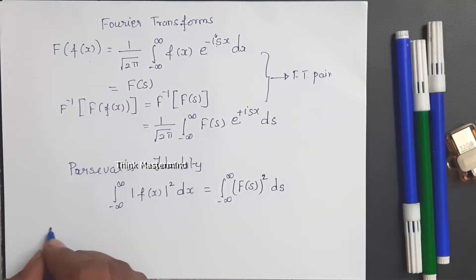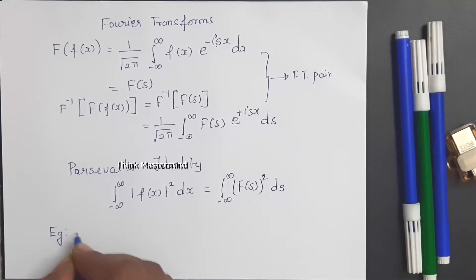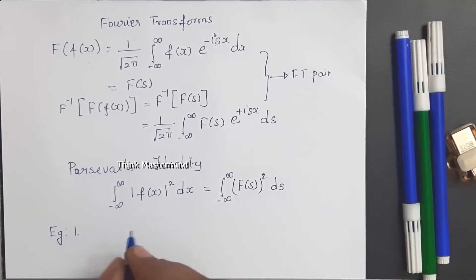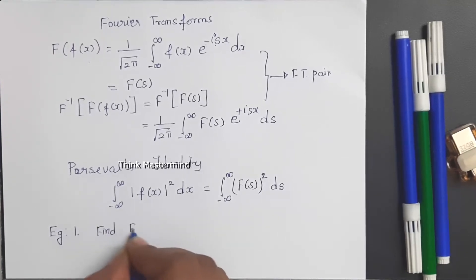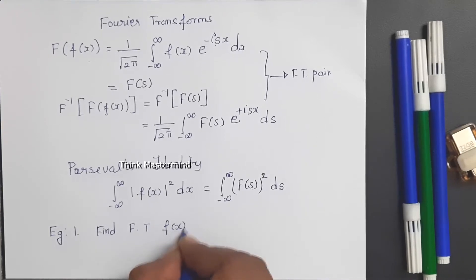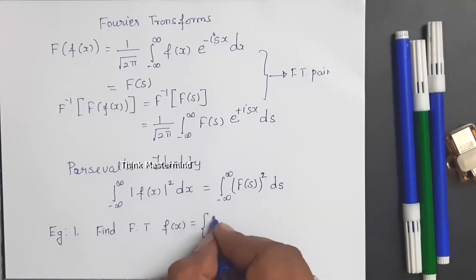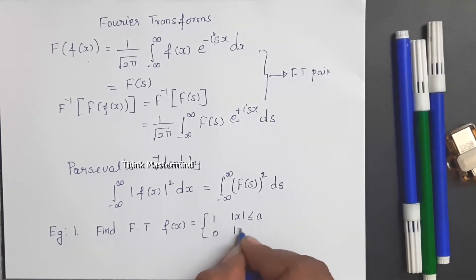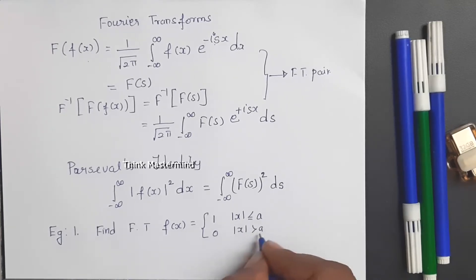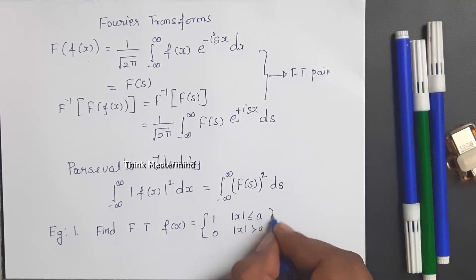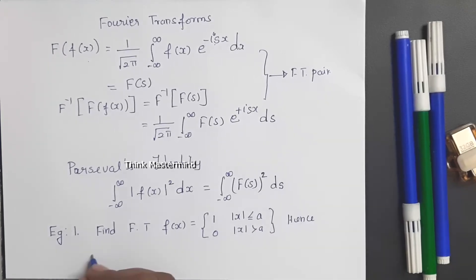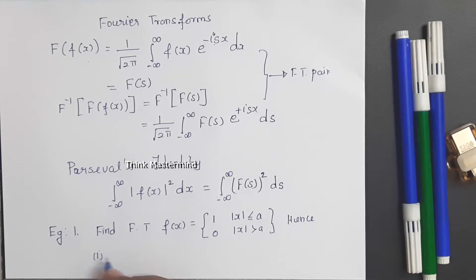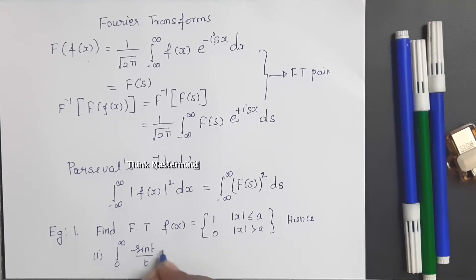Consider the first problem. Find the Fourier transform of f(x), where f(x) = 1 when |x| ≤ a, and f(x) = 0 when |x| > a. Hence find: (1) the integral from 0 to infinity of sin(t)/t dt.